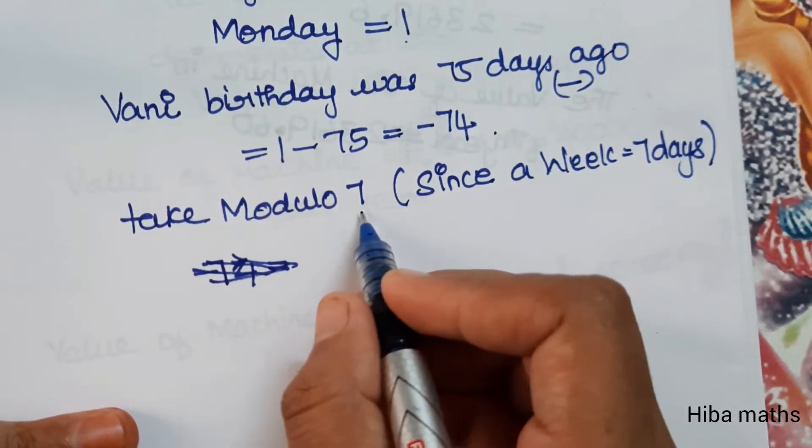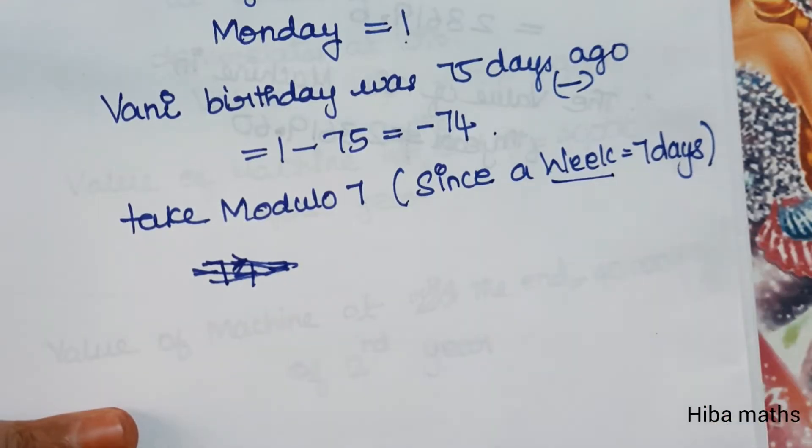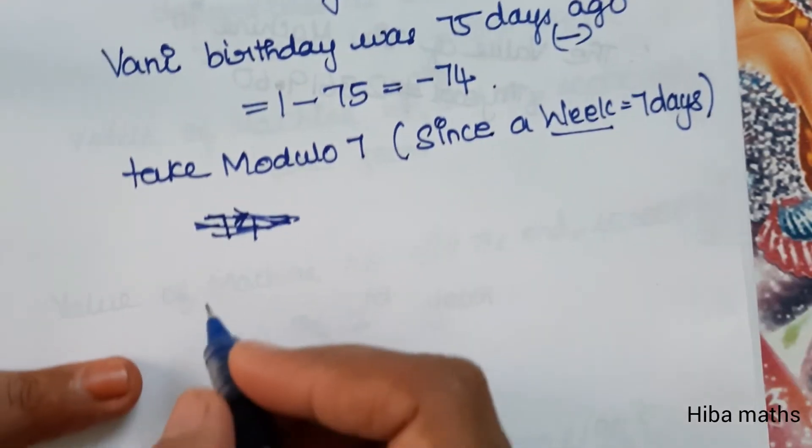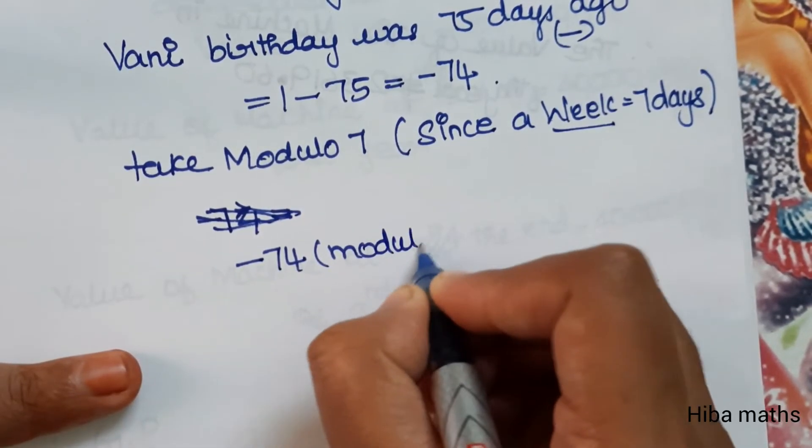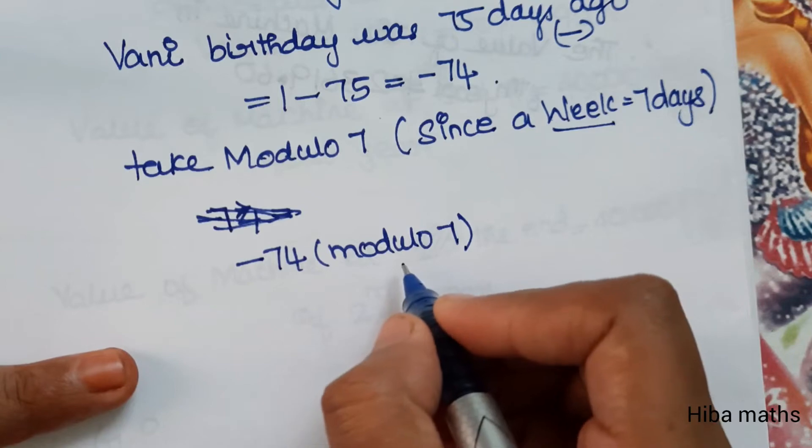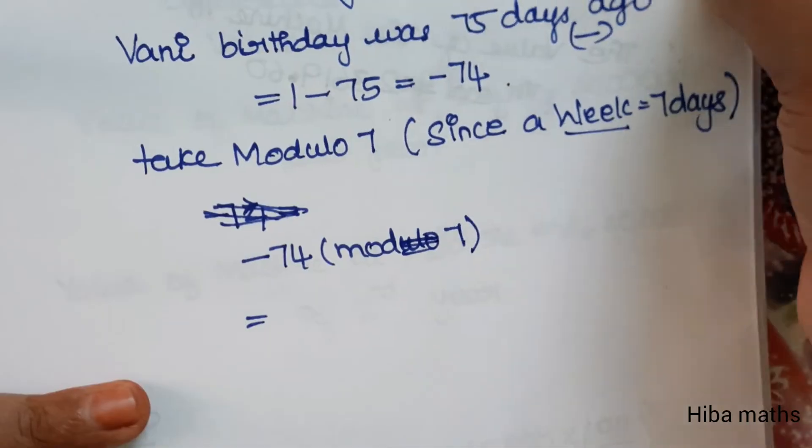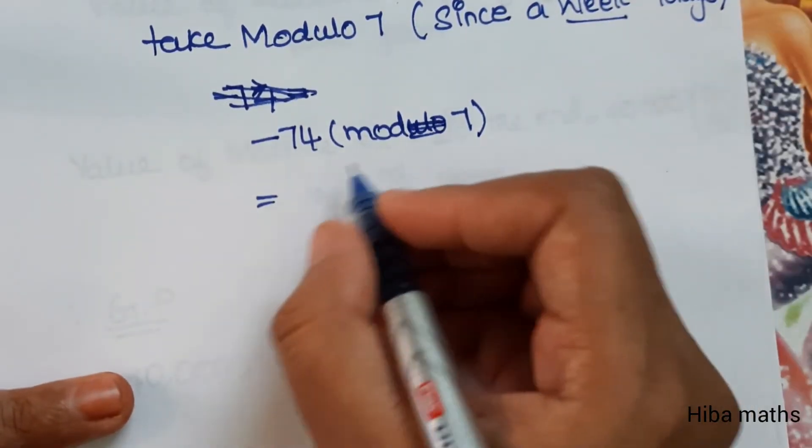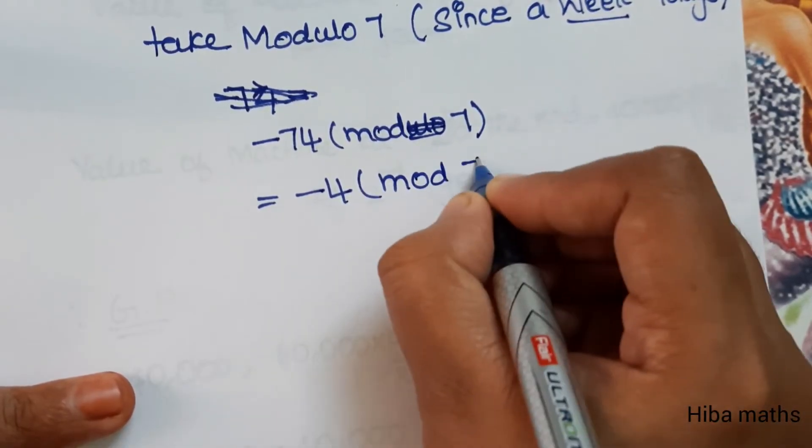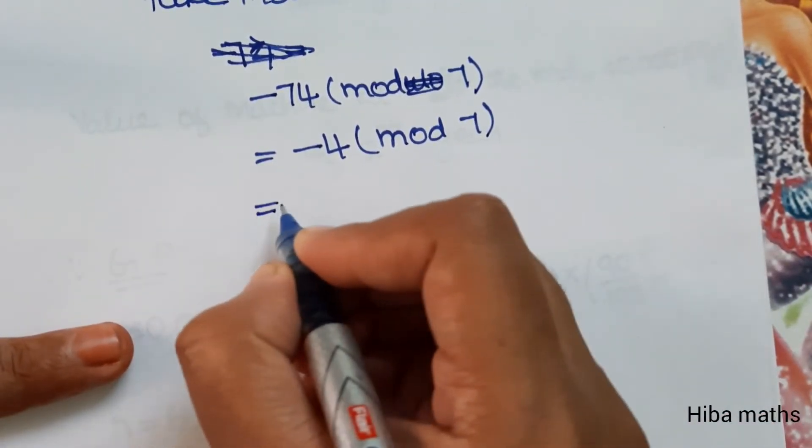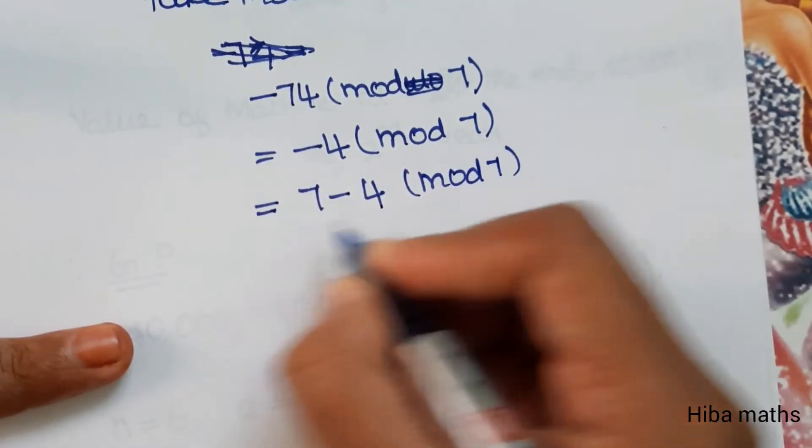Take modulo 7. When we have minus 74 modulo 7, it equals minus 4. Since it's negative, we add 7. Minus 4 plus 7 equals 3.